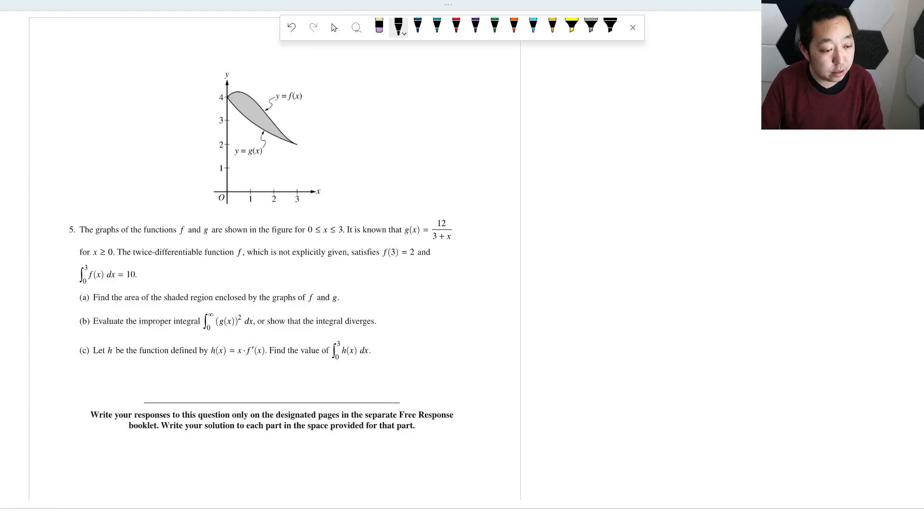All right, now we're looking at the BC Calculus 2023 FRQ number five. And as I've stated before, I do not have the solutions. They're not released yet. So these are my best guess at solutions.